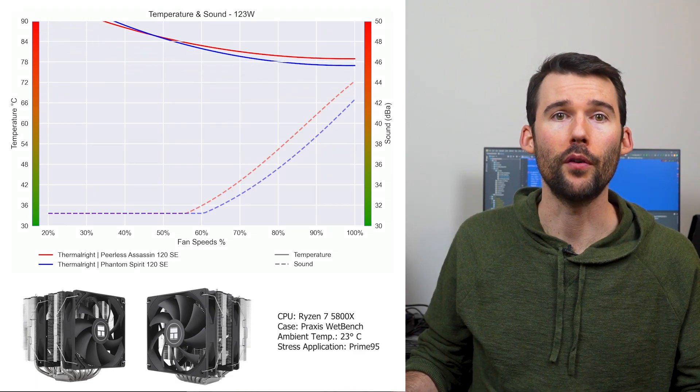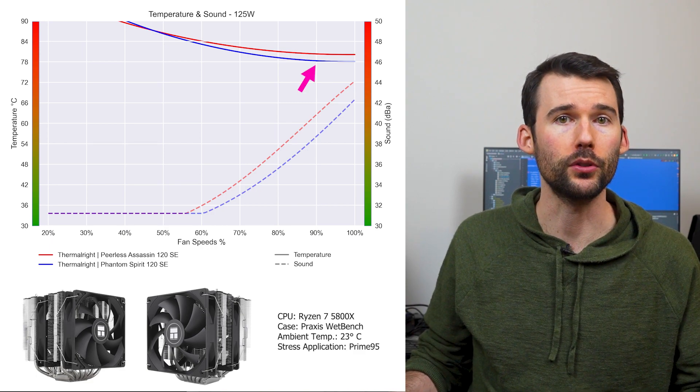When we push the CPU to overclocked levels of 125 watts, the Phantom Spirit pulls ahead slightly.